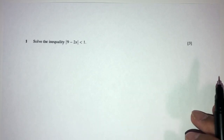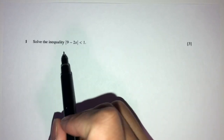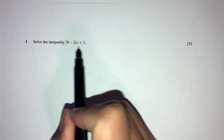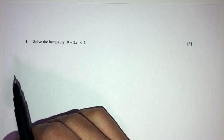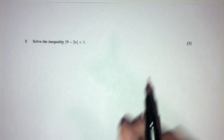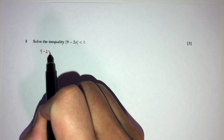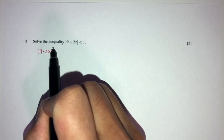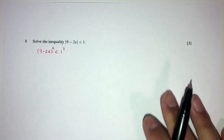So now we have question number 1. We have to solve the inequality modulus of 9 minus 2x less than 1. So here we have modulus, and there are a few ways of solving this. One is we can square both sides — that's one method. So to remove the modulus, we'll square both sides. You will have (9 minus 2x) squared less than 1 squared.